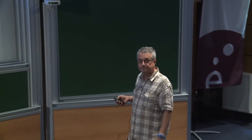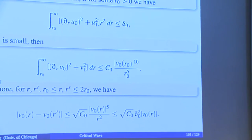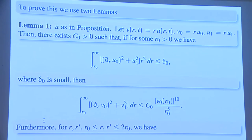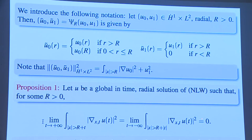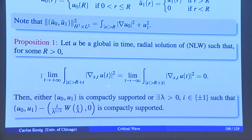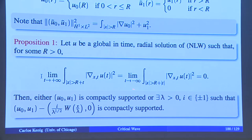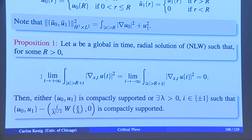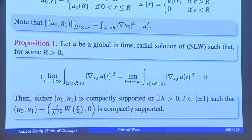The first lemma: suppose U is as in the proposition. A trivial but important comment: if the condition holds for some R₀, it holds for any R bigger than R₀ because those are smaller quantities. So I'm not wedded to the same R — I can always make it larger.